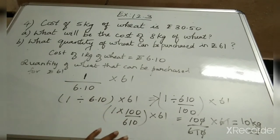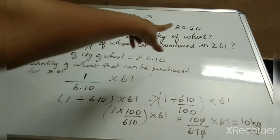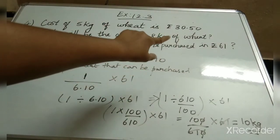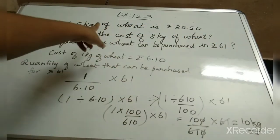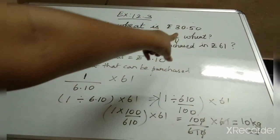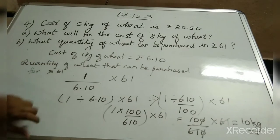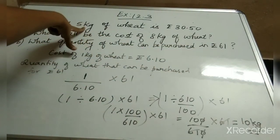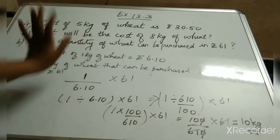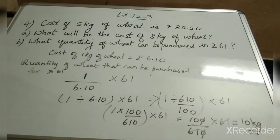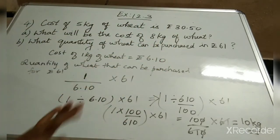This way you can simplify. Or if you look at the question — 5 kilograms of wheat is rupees 30.50. When you double 30.50 and add it again you get 61. So for 5 kg at rupees 30.50, doubling it means 30.50 plus 30.50 is 61, and 5 kg plus 5 kg is 10 kg. So directly you can find the answer. But in some problems it will not be like that, so in those sums we have to find it using the method shown.